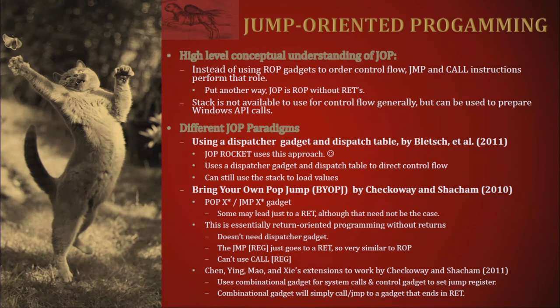Jump oriented programming, or JOP, differs in that we are using jump and call instructions in order to control the flow. JOP is really just ROP without the RETs. While the stack is not available for control flow, it is still necessary to use the stack in order to set up and make calls to the Windows API. A couple of different paradigms: we have the dispatcher gadget and the dispatch table — we'll get into more details in a few minutes. The JOP rocket uses both of those.